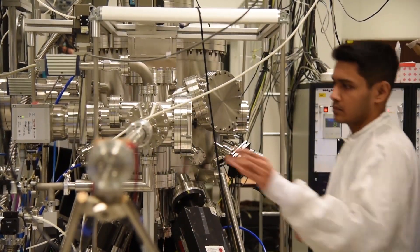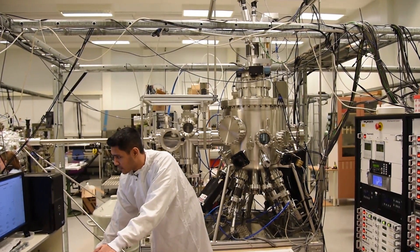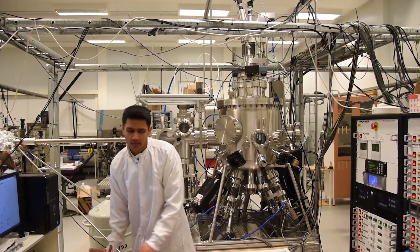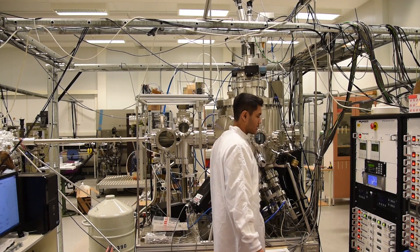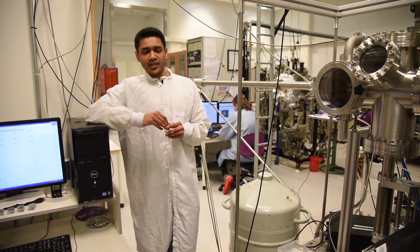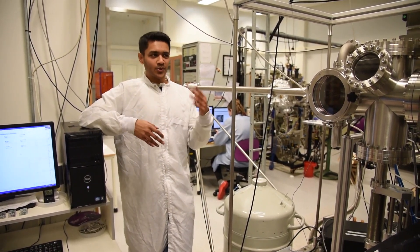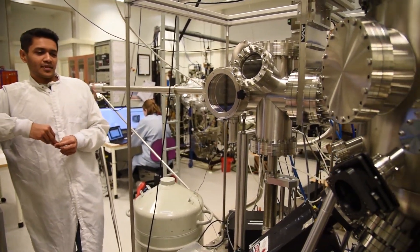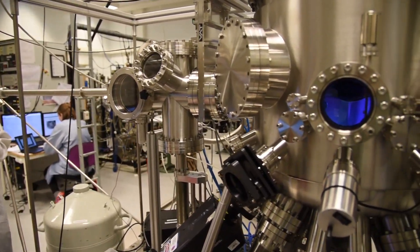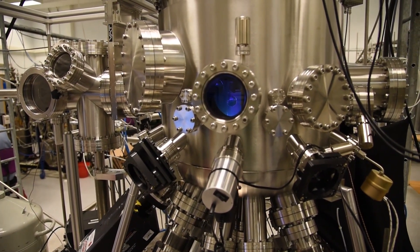I often explain this as baking a cake to friends and family. You choose your ingredients. The ingredients are those metallic sheets or metal targets. And then you decide what kind of flavor you want and then you bake the cake, basically you grow the structures in this giant oven which is the main chamber here. And depending on what flavor you want you can change the targets and achieve different kind of films.